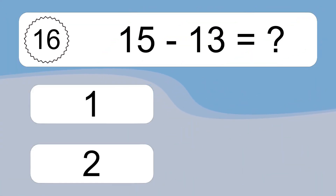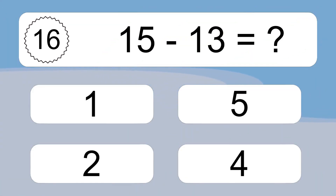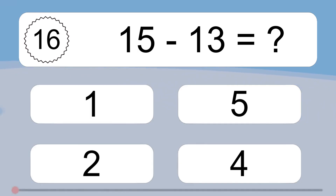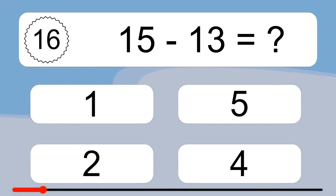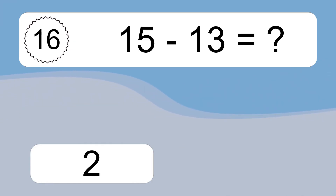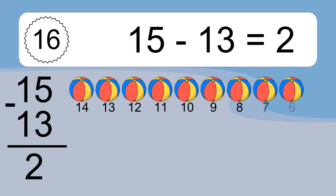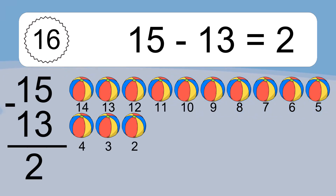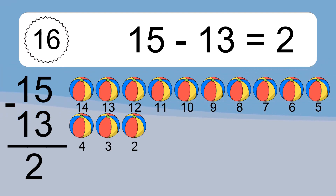15 minus 13 equals what? 10 minus 8. Let's count it. 15 minus 13 equals what? 15 minus 8. Let's count it. 14, 13, 12, 11, 10, 9, 8, 7, 6, 5, 4, 3, 2.